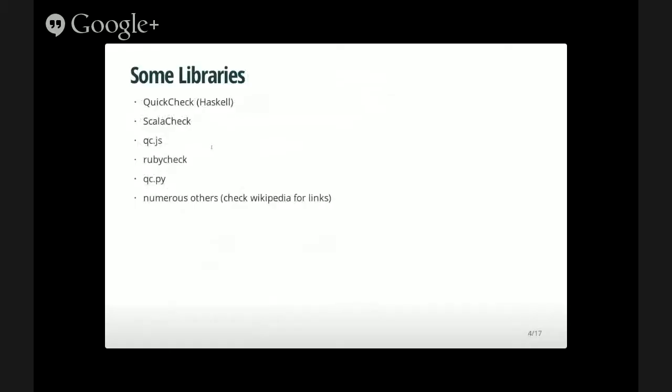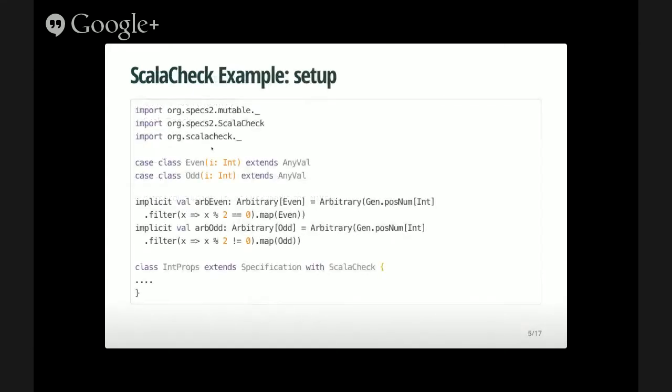So here are some libraries. My examples today are all going to be in Scala, because that's what I'm familiar with. But it was inspired by the QuickCheck library in Haskell, and there are other libraries in JavaScript, Ruby, Python, and numerous others. So definitely check. Now, the main idea was to just give a brief overview of what property-based testing is rather than sort of specifically talk a lot about how ScalaCheck works. But with that being said, I still do want to go through some examples, because I think that's a good way to learn.